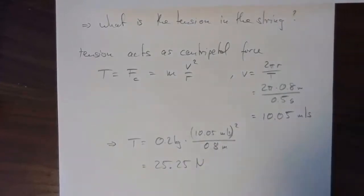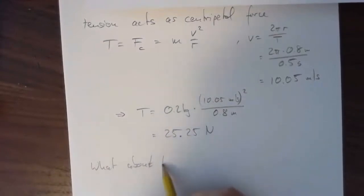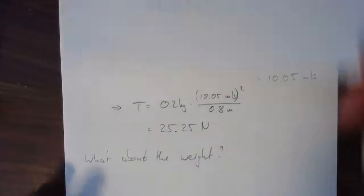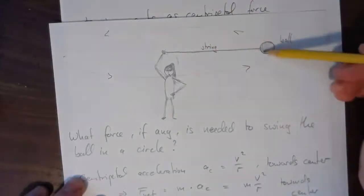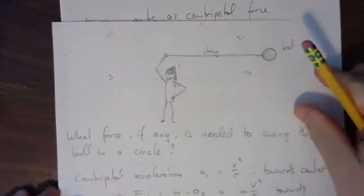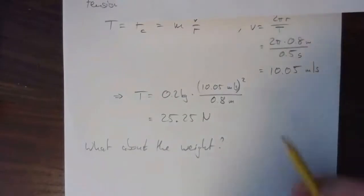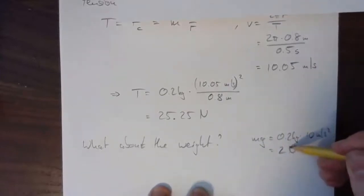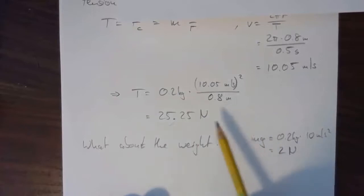I ignored the weight of the ball in that problem. The weight acts downward, so what is holding the ball up? This is a valid concern. Realistically, you can't have the string perfectly horizontal. However, the weight is M times g = 0.2 kg × 10 m/s² = 2 newtons, which is less than a twelfth of the 25-newton tension, so its impact is comparatively small and can be neglected in this approximation.